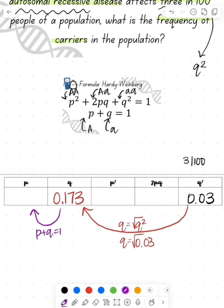So then p plus q equals 1. So we know that if we do 1 minus the q value, we'll get our p value, which is 0.827.